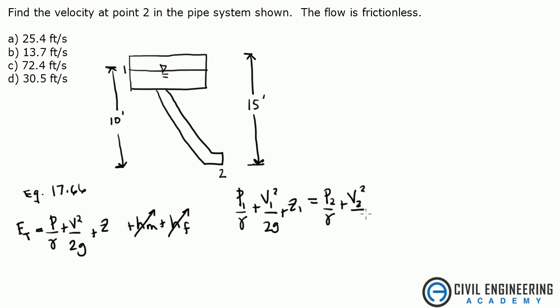This equals pressure at 2 over gamma plus velocity at 2 squared over 2g plus z2. Now pressure at 1 is going to be 0 because it's open to the atmosphere. And the velocity at 1 is going to be 0 because you're dealing with a large body relative to the system.